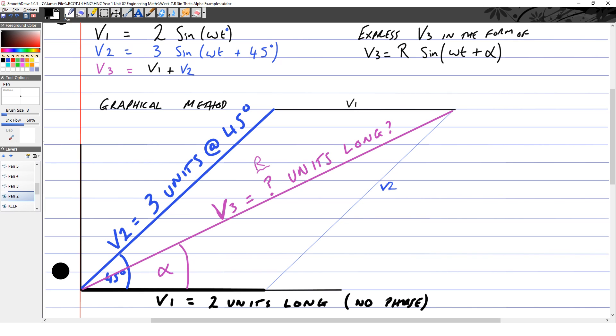V3 is the diagonal of the parallelogram. R is its length and its amplitude, and alpha is the phase shift.